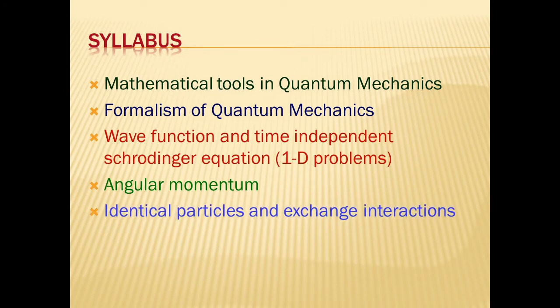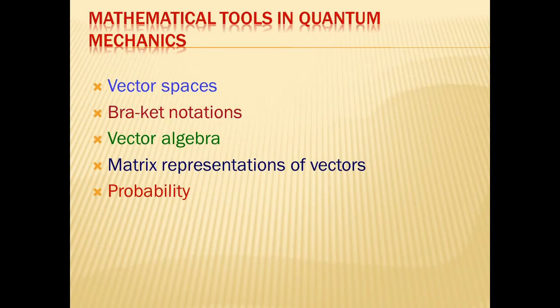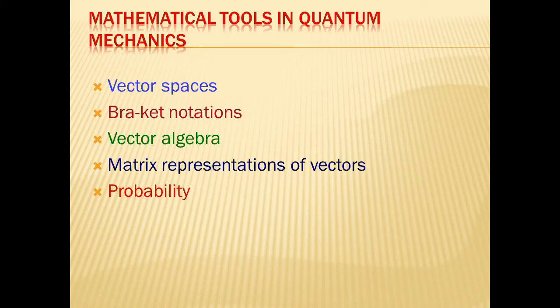In the first unit on Mathematical Tools, we will discuss vector spaces, bra and ket notations, vector algebra, inner products, and basis vectors using bracket notation. Understanding vector spaces will require a minimal amount of calculus — many problems can be solved without differentiation and integration. We will also cover probability, since quantum mechanics is a probabilistic theory, though this will be a short part.